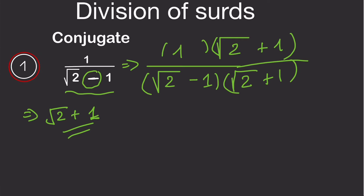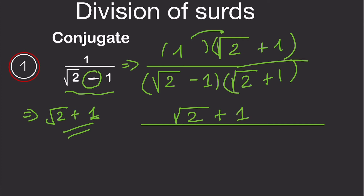If we multiply the numerator by root 2 plus 1, since we are multiplying by 1 it remains the same, leaving us with root 2 plus 1 on top. For the denominator, we use the principle of difference of two squares.